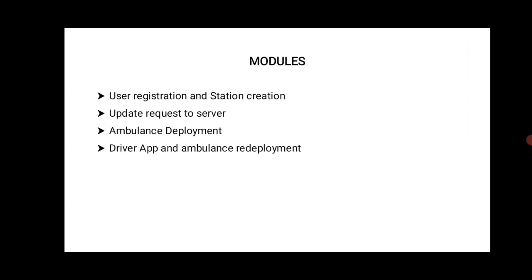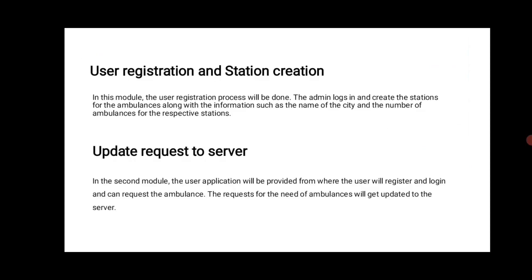In the user registration and station creation module, the user registration process will be done. The admin logs in and creates the station for ambulance along with information such as the name of the city and number of ambulances for the respective station. In the second module, update request to the server, the user application allows the user to register, log in, and request the ambulance. The request for the ambulance will be updated to the server.